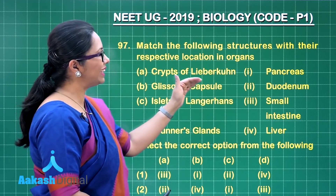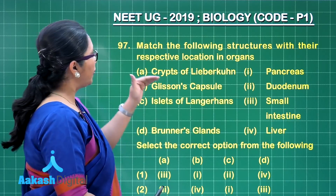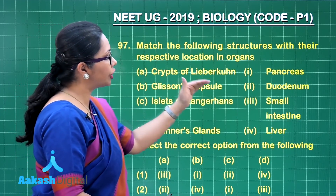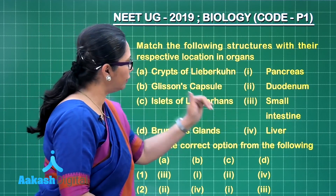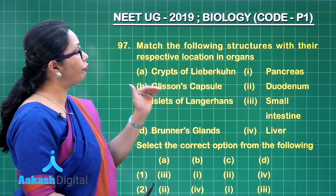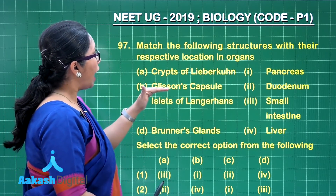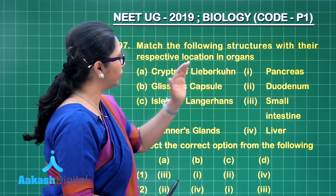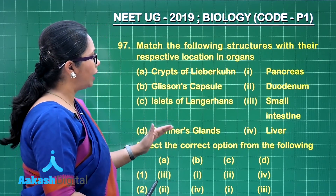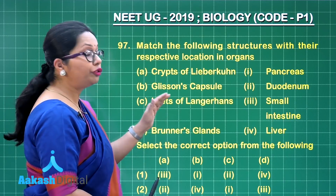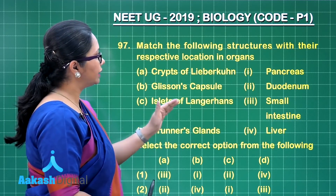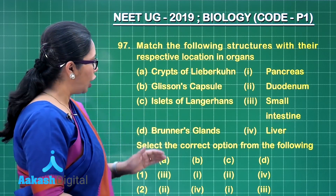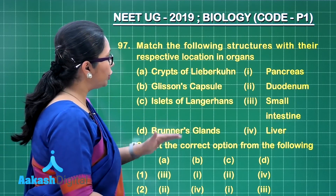Glisson's capsule is a sheath which covers the liver, and it is characteristic of the mammalian liver. Islets of Langerhans is the endocrine part of the pancreas. And Brunner's glands are the glands which secrete alkaline mucus, and these are present in the submucosa of the duodenum.